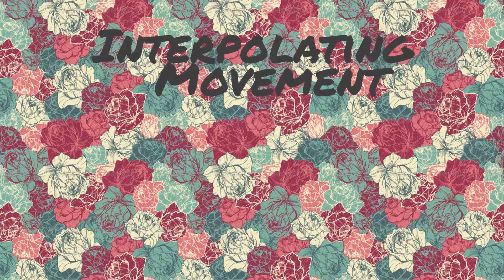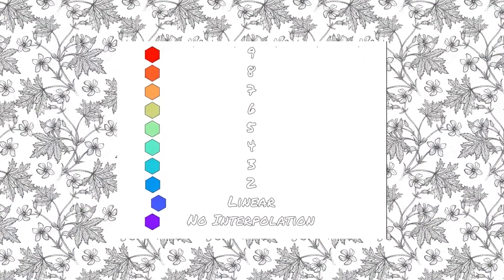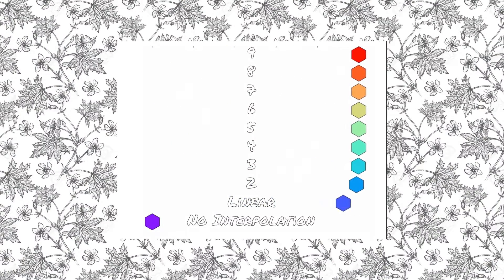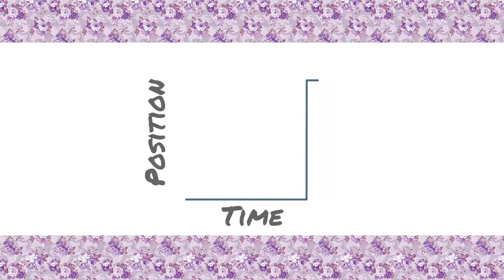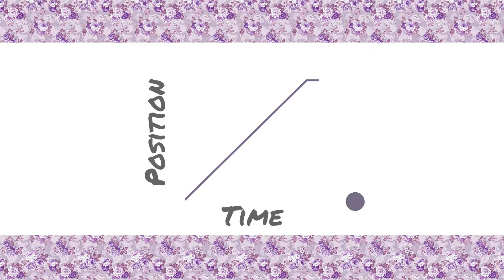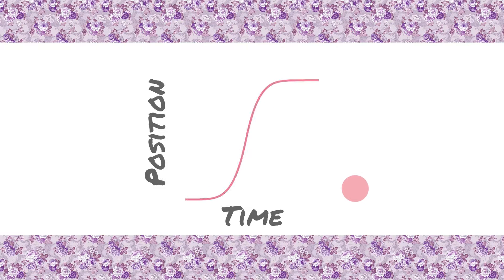For power interpolation, the higher the exponent, the more it resembles no interpolation actually, so it's more poppy. Taking a closer look at these represented as time series functions: the no interpolation case looks like a step function, the linear case looks like a nice smooth ramp, and this nice handsome fellow is the power interpolation.